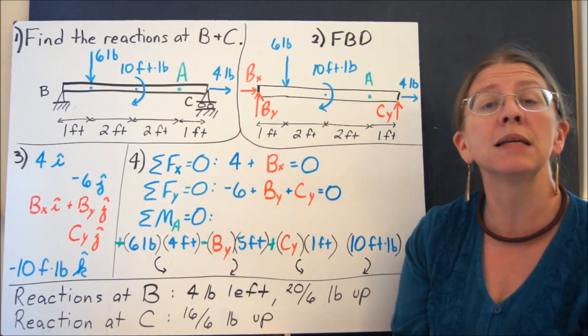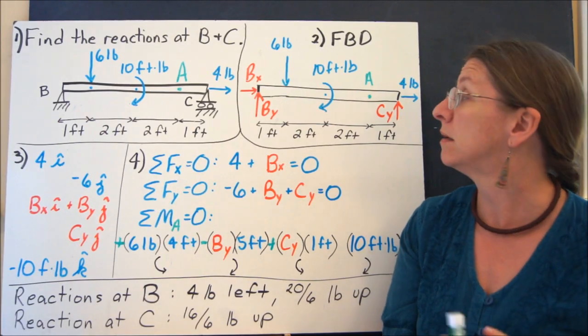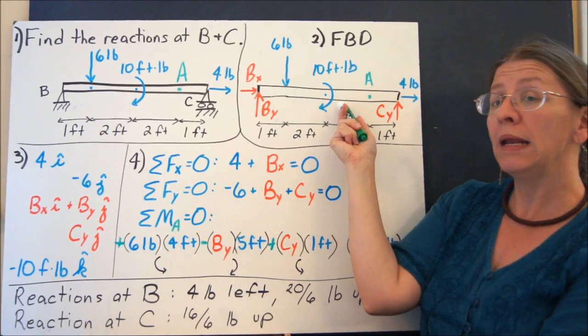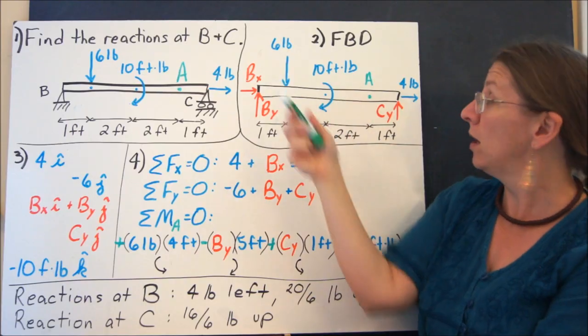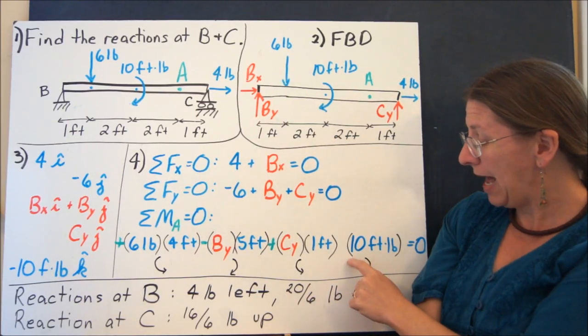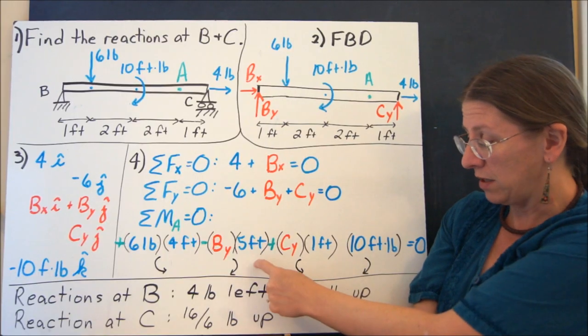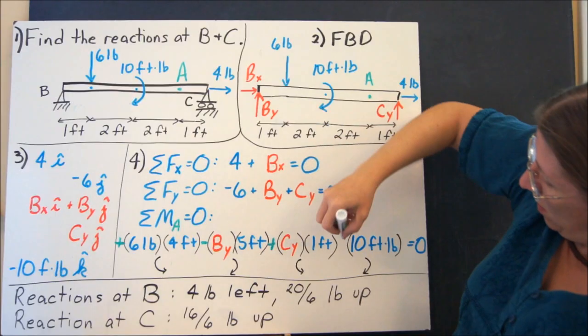The 10 foot pound load doesn't get multiplied by anything. It's an applied load. It's already a moment. So it's already tending to spin the beam clockwise. So the sign in this equation of this term needs to match this one. So this will be also negative.